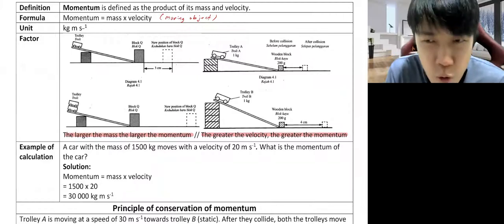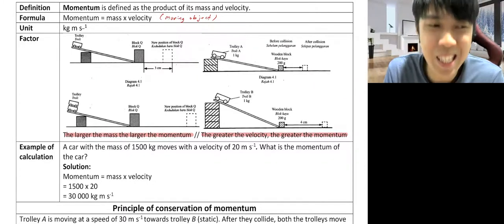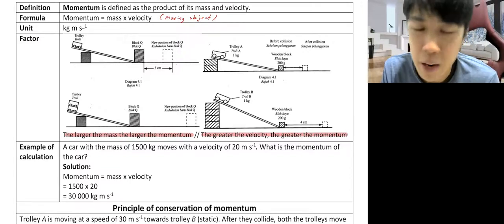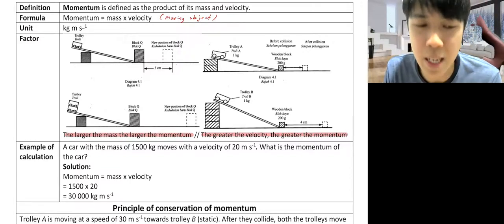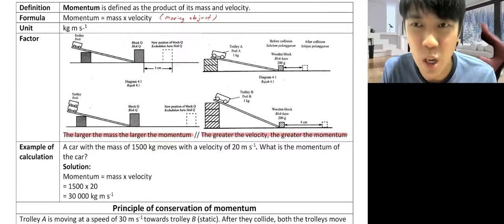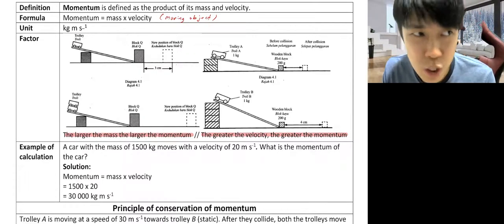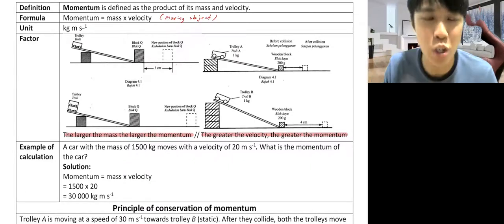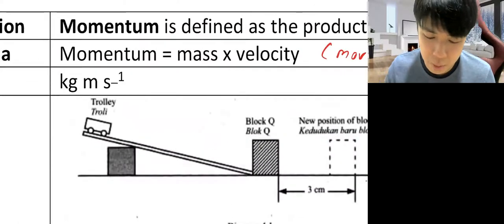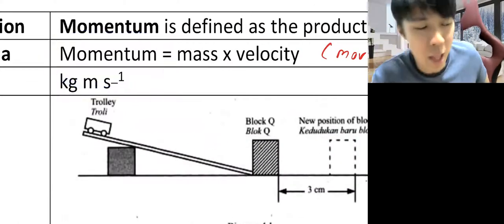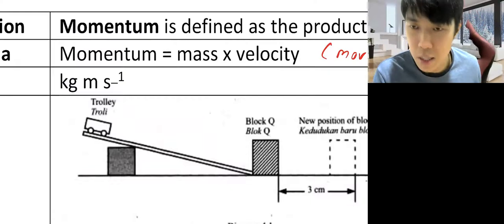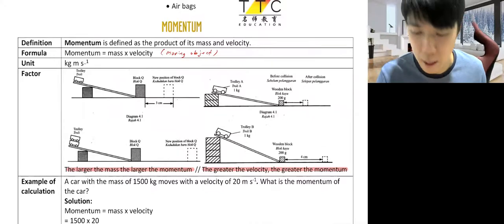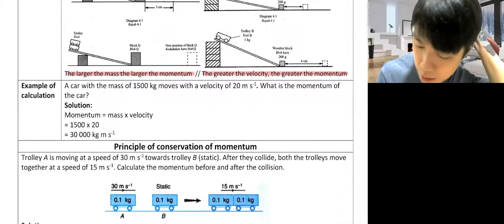So if you see a lorry or bus that is speeding, that's going to be very bad if there is any collision or accident. Because a bus or lorry already has a very big mass, and if it is speeding, the momentum number is going to be huge. When the lorry or bus crashes, that's the momentum in action. So we have only two factors involved: mass and velocity.